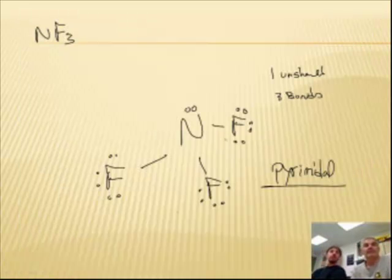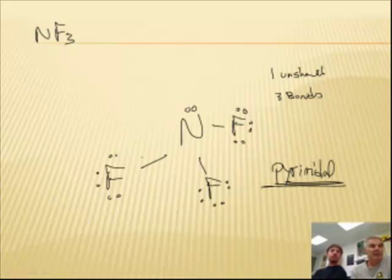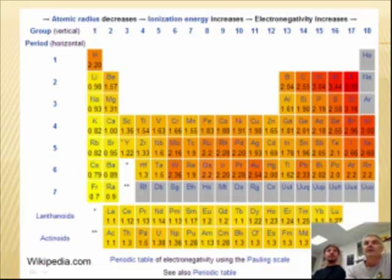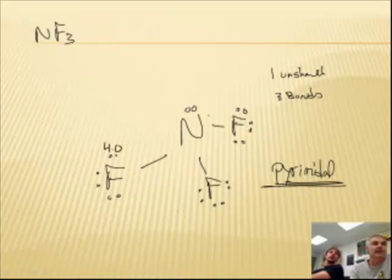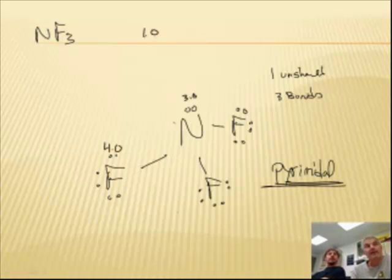This next one, NF3. This is a pyramidal shape. Let's check our bonds. The fluorine, I happen to know, is 4.0. And then nitrogen is 3.0. So this is 3.0. So the difference is 1.0. That classifies as a polar bond. So it's a polar bond. The bond, check. Now let's see if he's also fast, if you will. The shape.